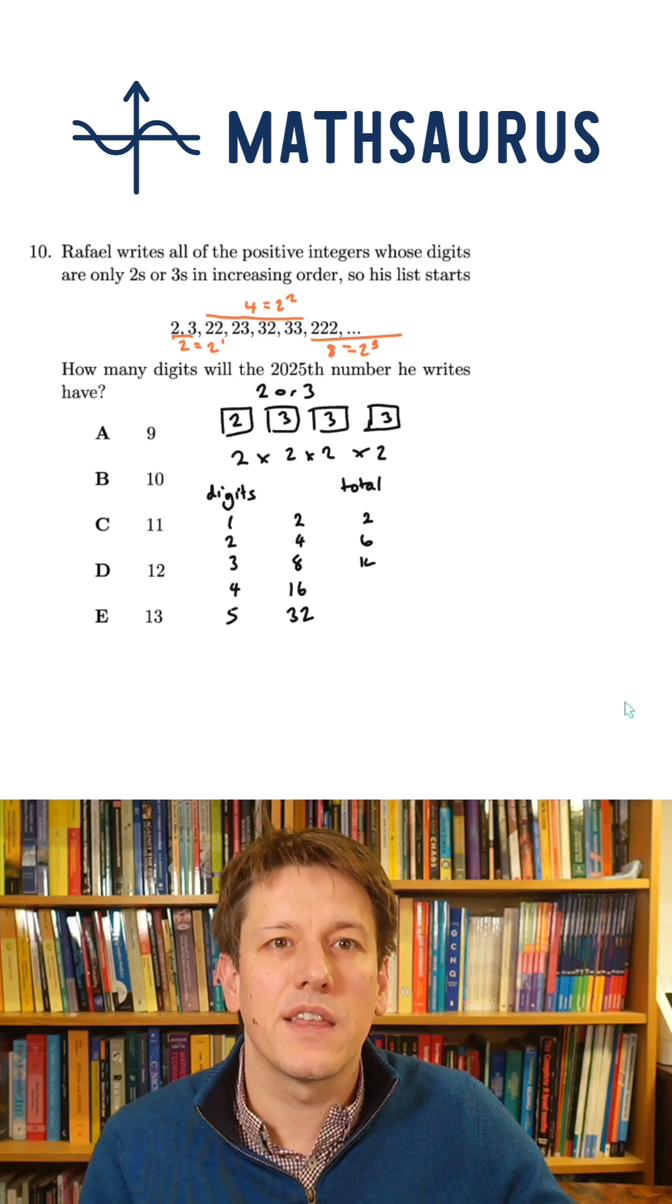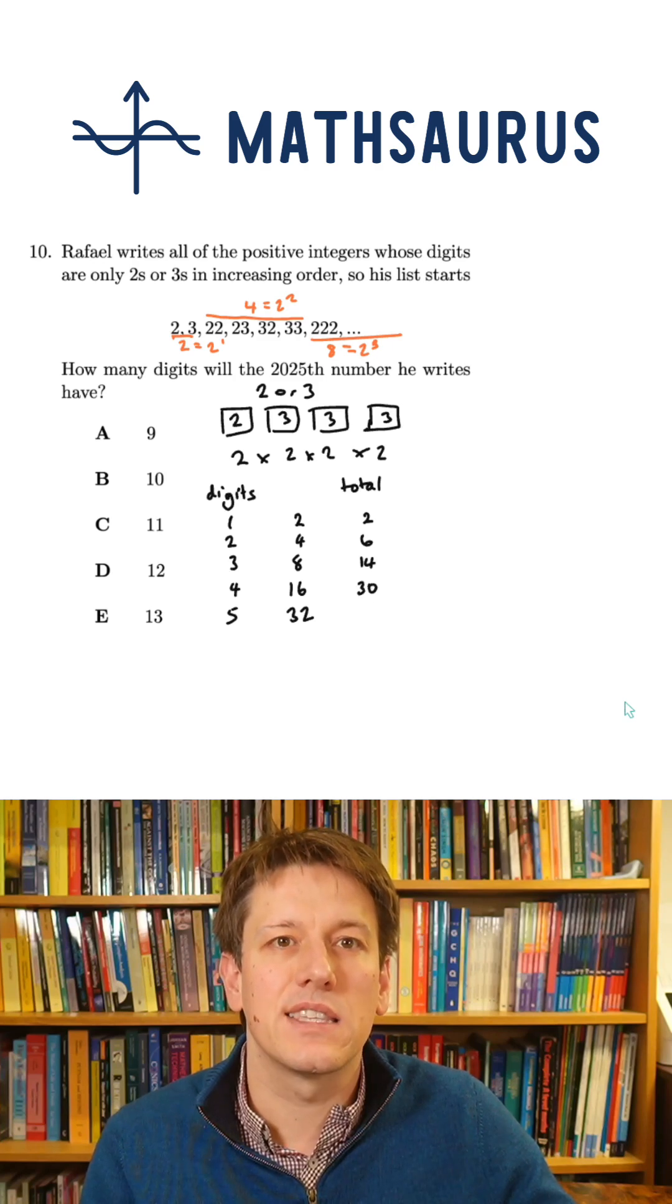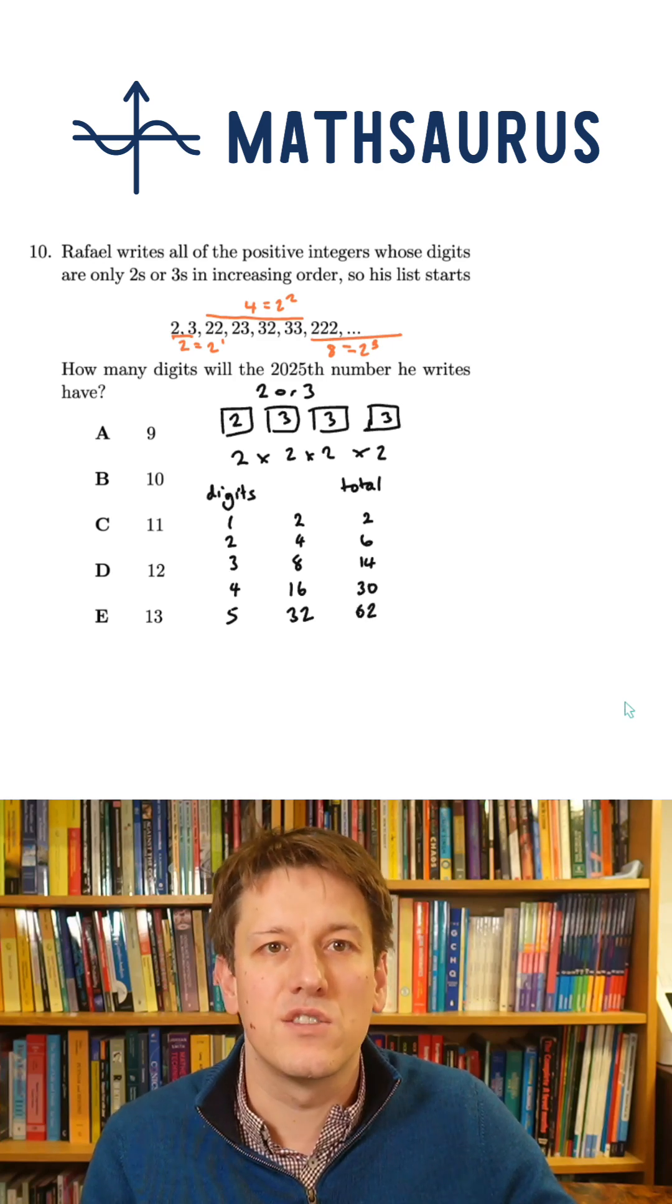So if I do 2 plus 4 is 6, then add 8 to get 14, add 16 to get 30, add 32 to get 62.